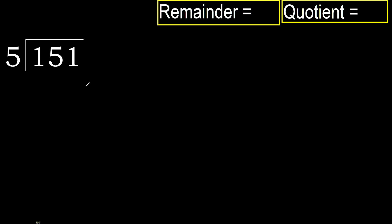151 divided by 5. 1 is less, therefore next. 15 is not less, therefore with 15 and 5.